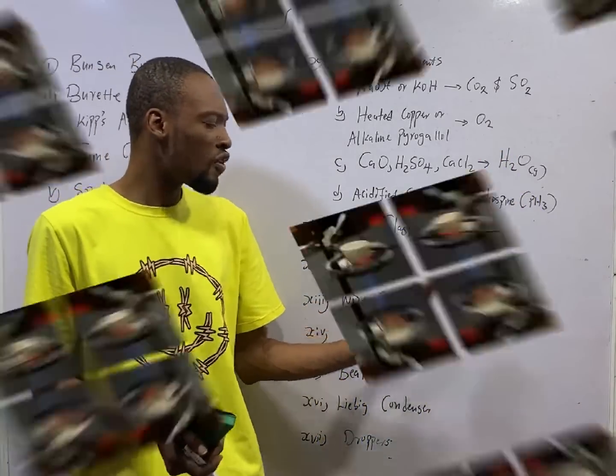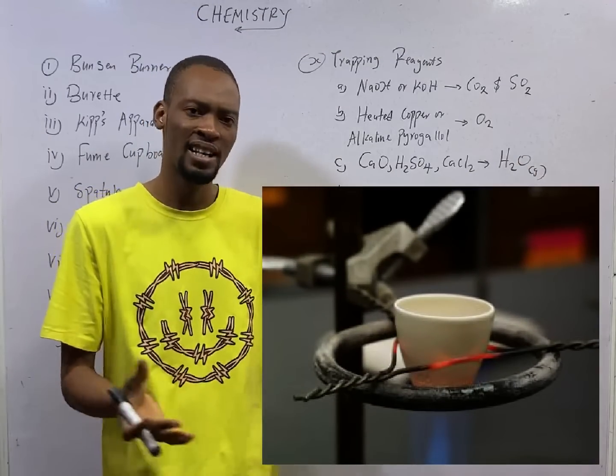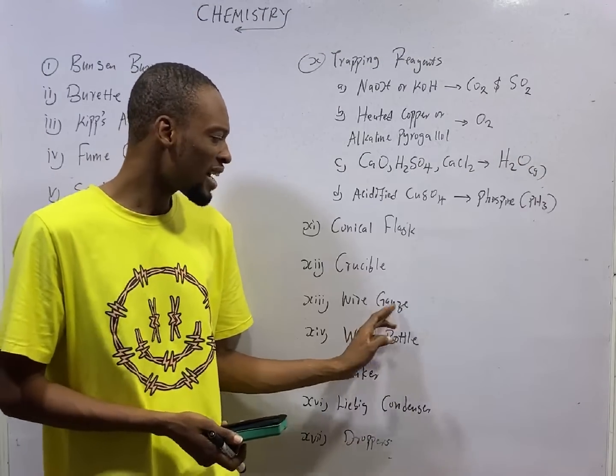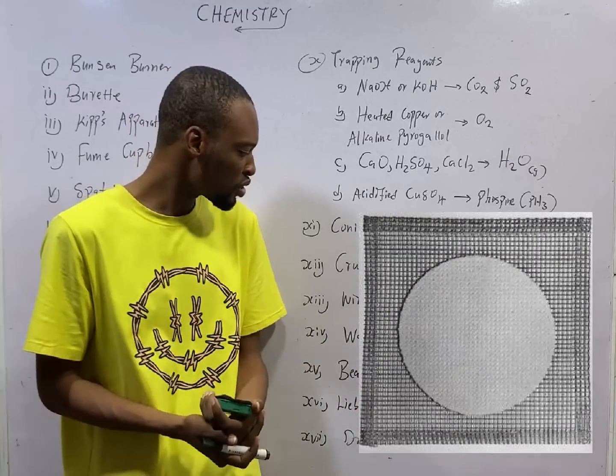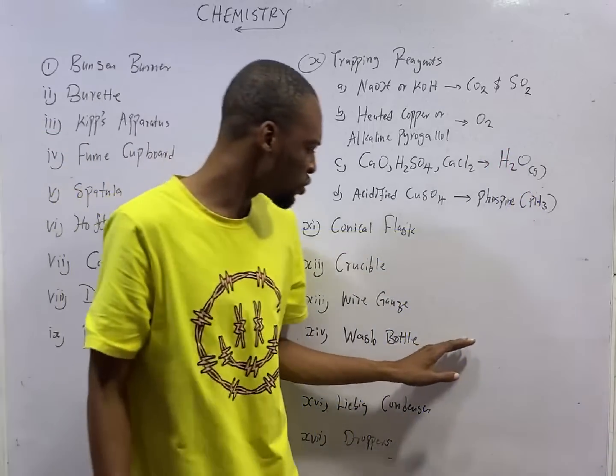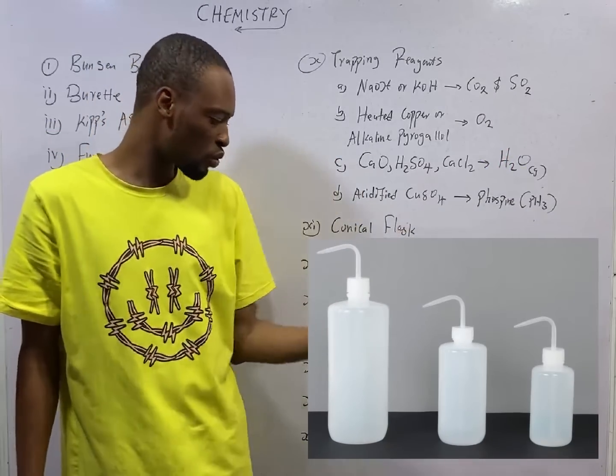Acidified copper-2 tetraoxysulfate-6 is used to trap phosphine or PH3. Crucibles are used for heating small amounts of substances at very, very high temperature. Wire gauze are used to spread the heat that are being produced so that they become uniform.